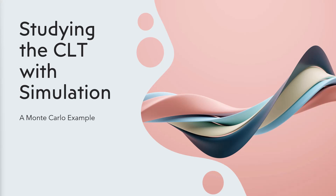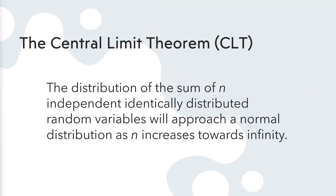Let's remind ourselves how the central limit theorem works. The distribution of the sum of n independent, identically distributed random variables will approach a normal distribution as n increases towards infinity. This means that if we take a large enough sample size and add the values from our observations together, that sum will approach a normal distribution. The bigger n is, the closer we would expect to be to that normal distribution.